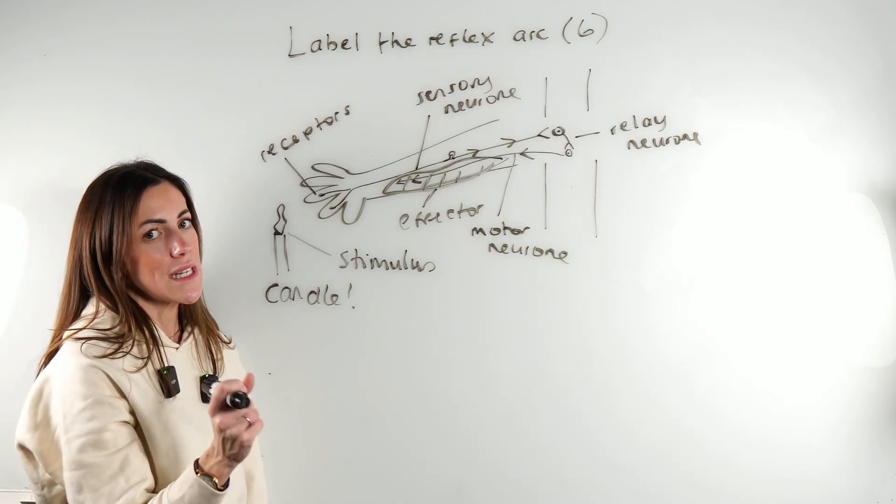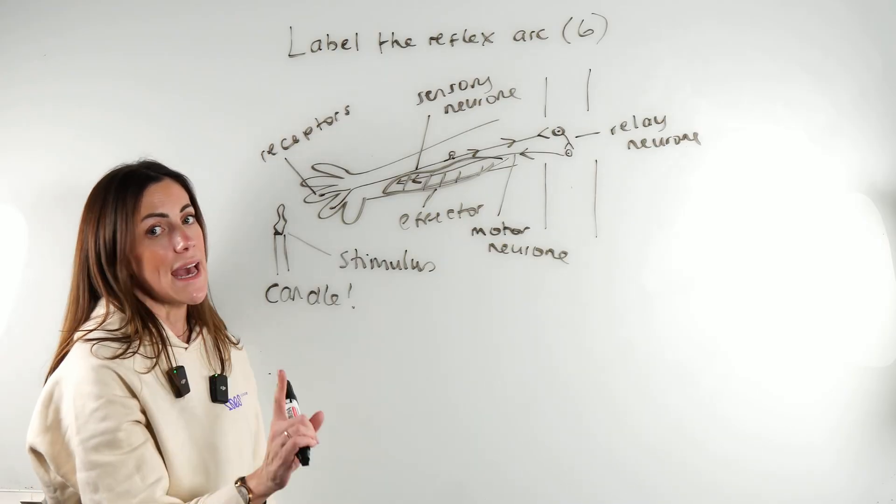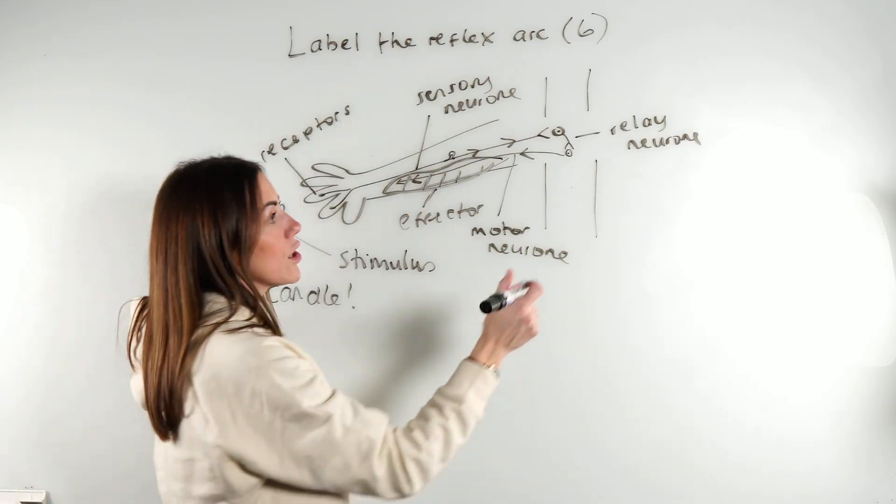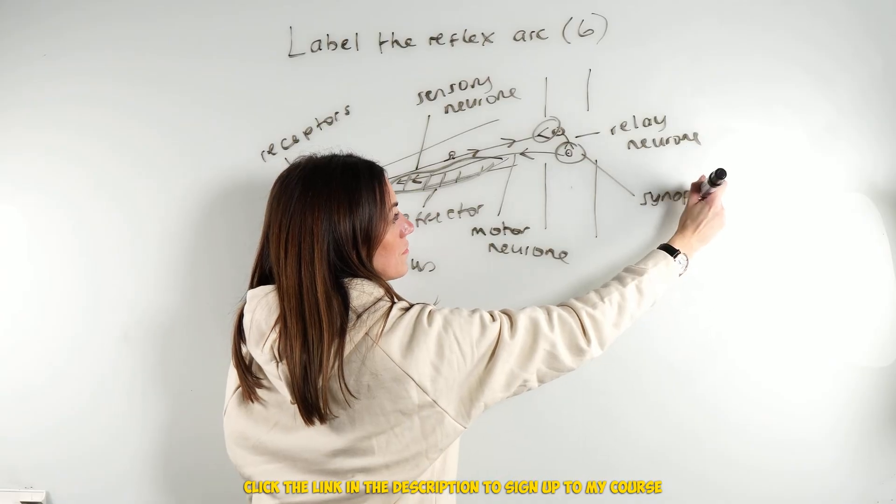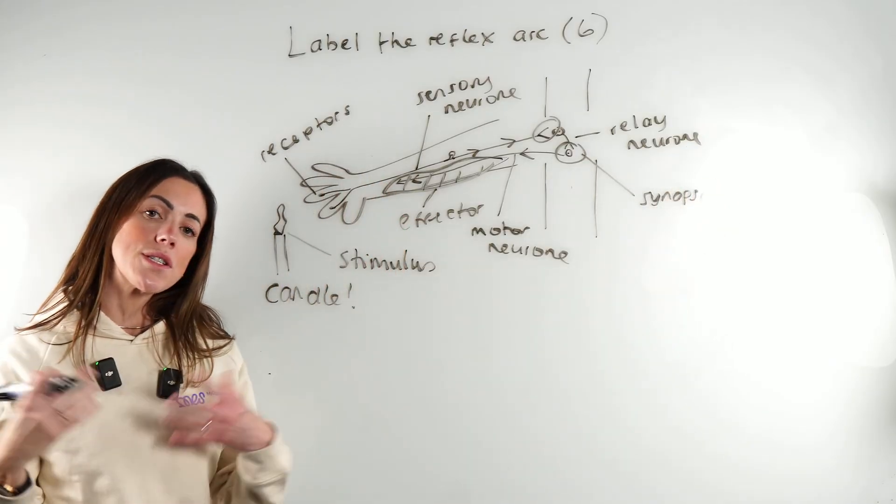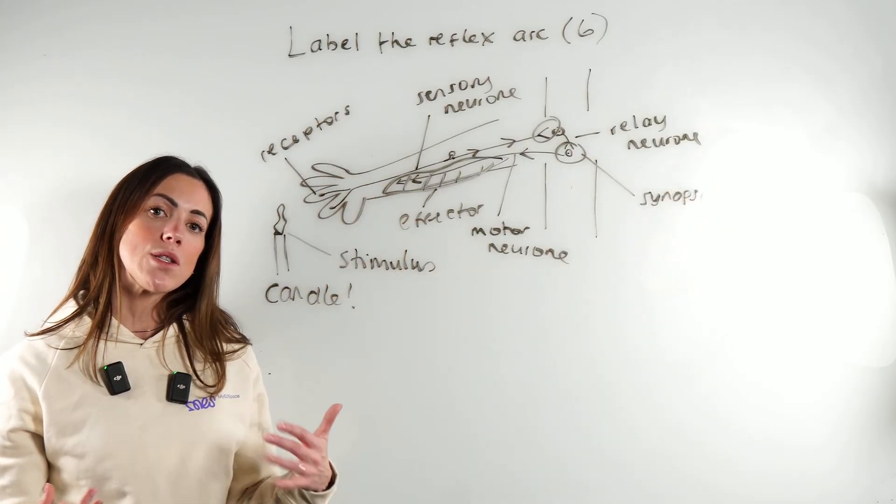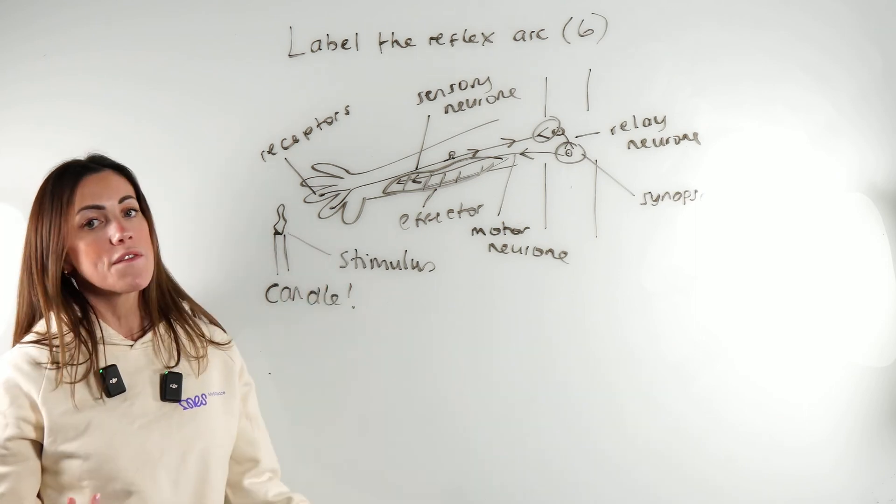One other thing I wanted to label with you—don't forget that in the reflex arc you also have synapses. A synapse is just a gap or junction between two neurons, so there'll be two of them here.